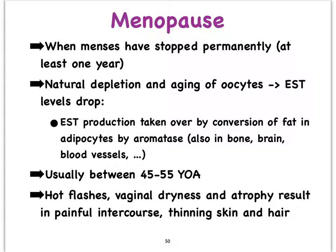There are some consequences with the severe and somewhat rapid drop in estrogen. We may start seeing problems with bone density. The vascular system is affected, causing women to develop very regular hot flashes. The vagina begins to atrophy and becomes rather dry, making sexual intercourse much more painful. Hair as well as skin begins to thin. A lot of this has to do with the fact that so many places in our body have estrogen receptors — it even impacts women's brains because of the drop in estrogen levels.